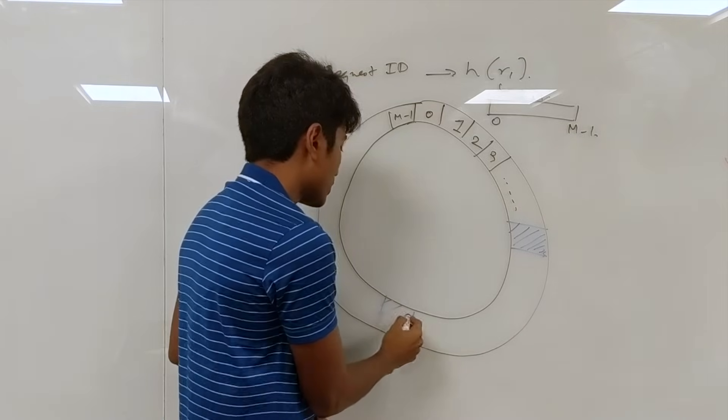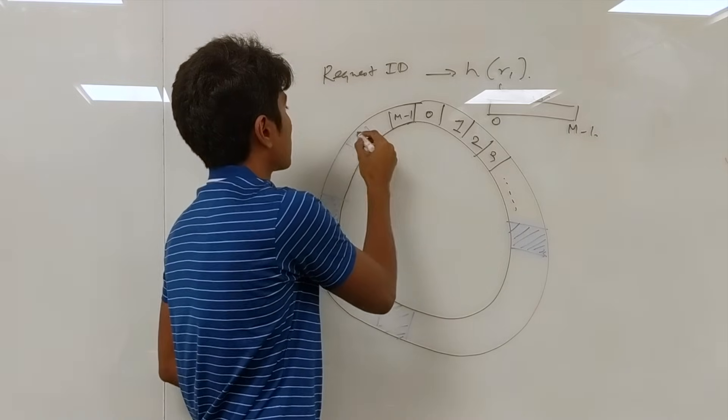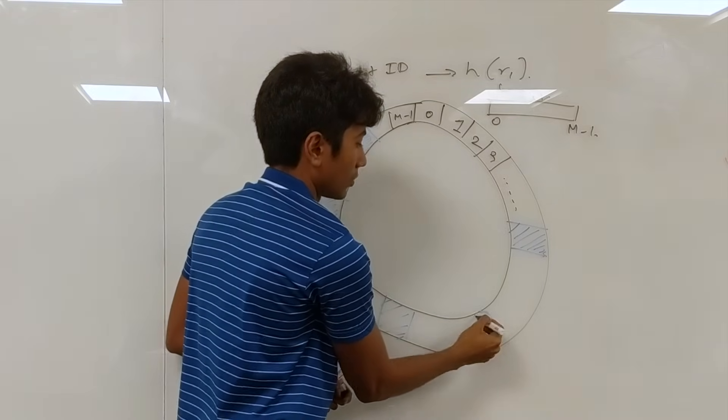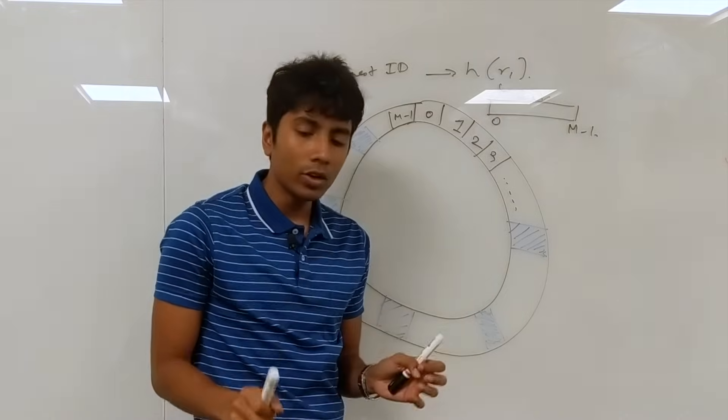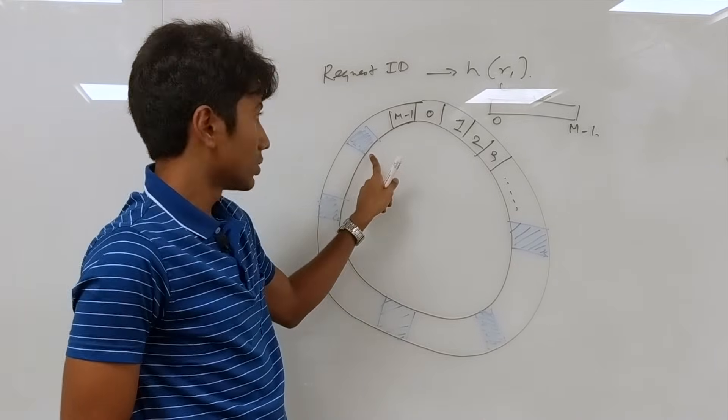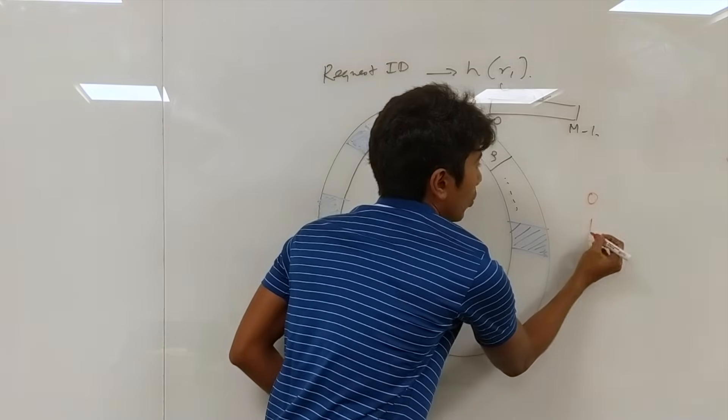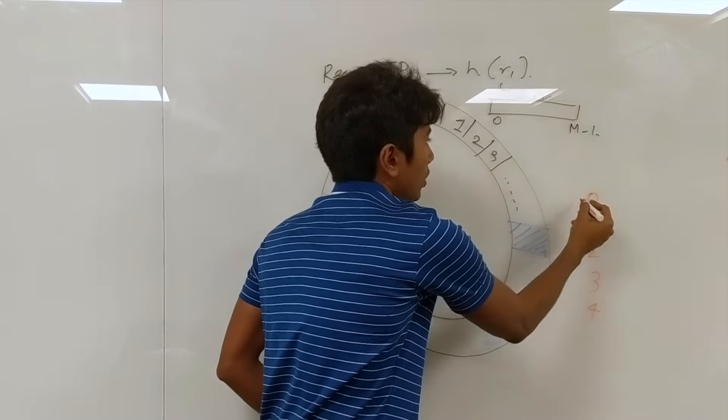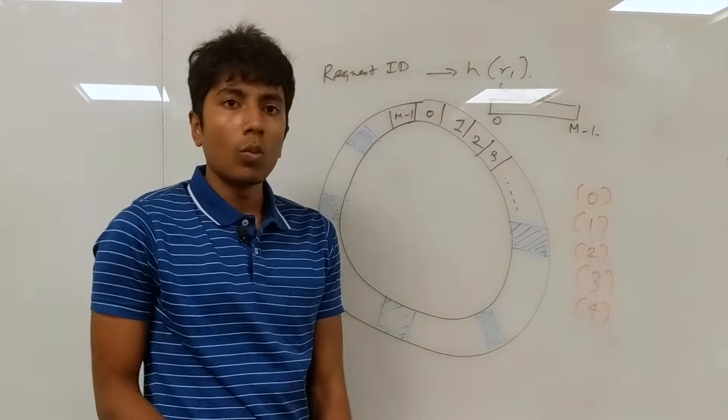We are going to have multiple requests. So these are where the requests are. Now what we can do is we can take the servers and we actually need to send these requests to those servers. The servers themselves have IDs which are from 0, 1, 2, 3, 4. First we had just four servers, so these are the server IDs.